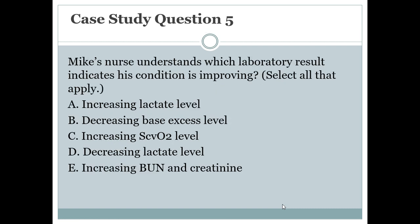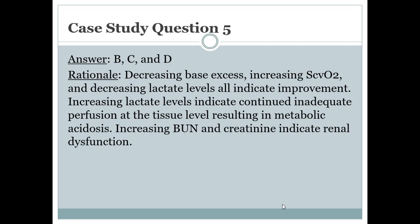Case study question 5: which laboratory results indicate Mike's condition is improving — select all that apply? The answers are B, C, and D: decreasing base excess, increasing SCVO2, and decreasing lactate levels all indicate improvement. Increasing lactate levels indicate continued inadequate perfusion at the tissue level, resulting in metabolic acidosis. Increasing BUN and creatinine indicate renal dysfunction.